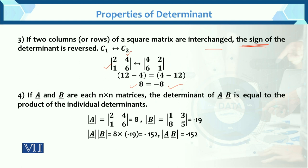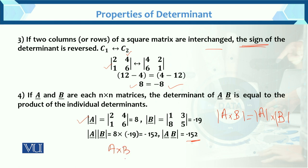Property number 4: if A and B are each n×n matrices, the determinant of A×B is equal to the product of the individual determinants — det(AB) = det(A) × det(B). You can calculate det(A) and det(B) separately and multiply them, or compute A×B first and then find its determinant; the results will be the same.